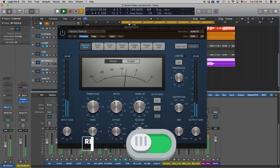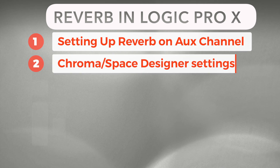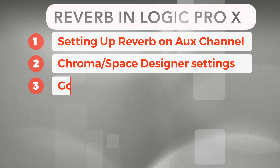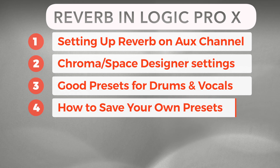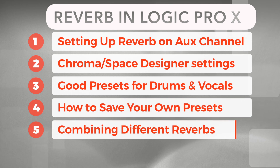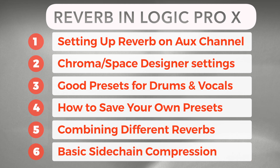Here's what we covered today: setting up reverb on an auxiliary channel, the Chroma verb and Space Designer settings, good presets for drums and vocals, how to save your own presets, combining different reverbs, and basic sidechain compression.